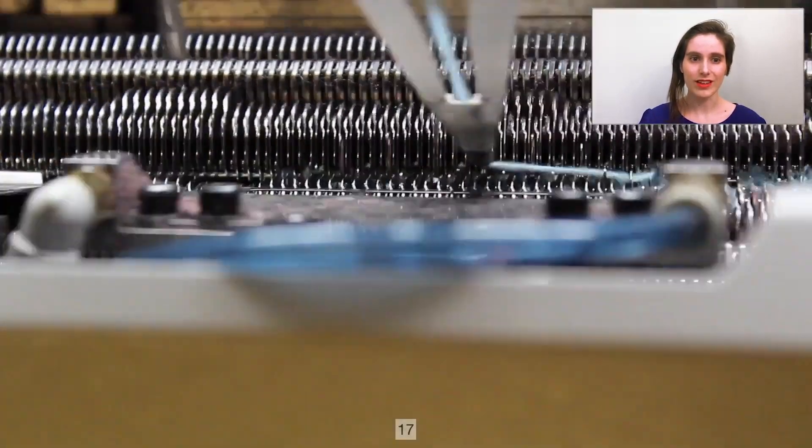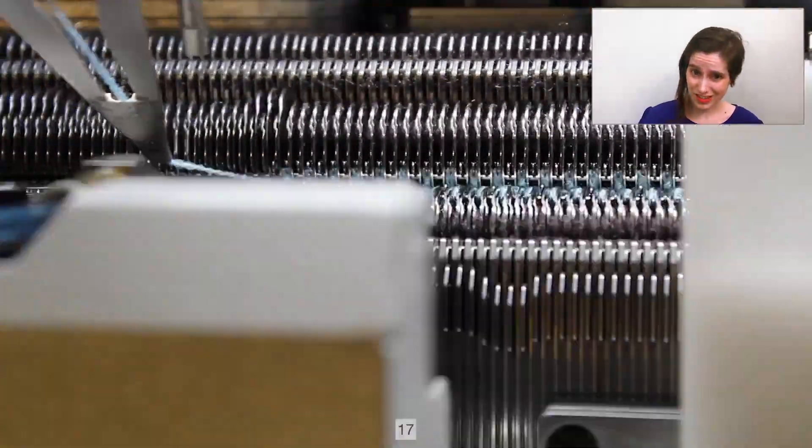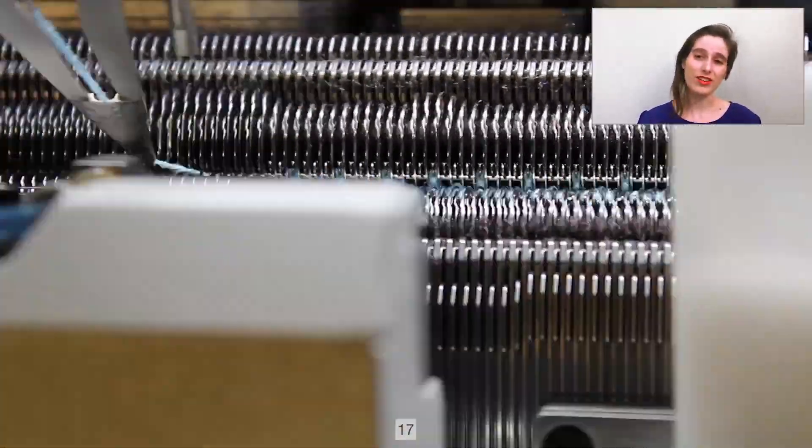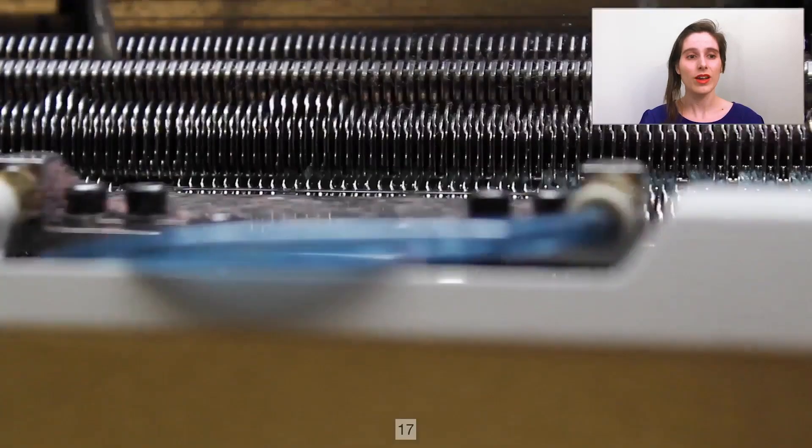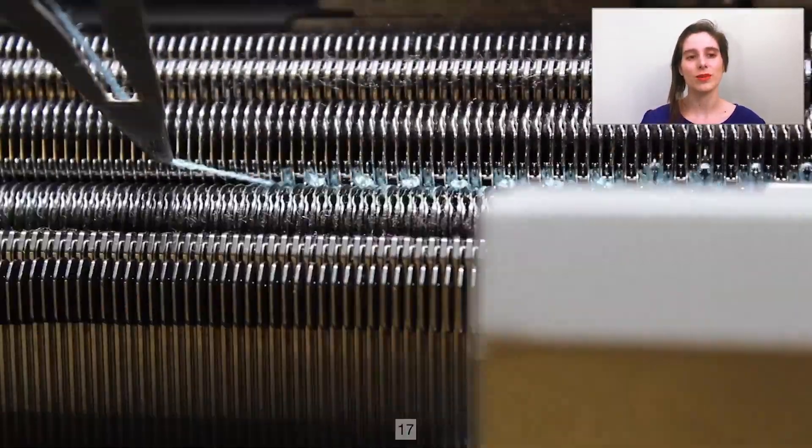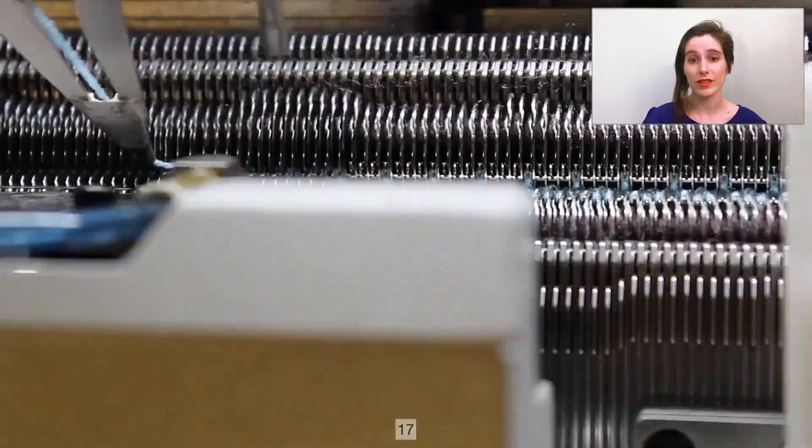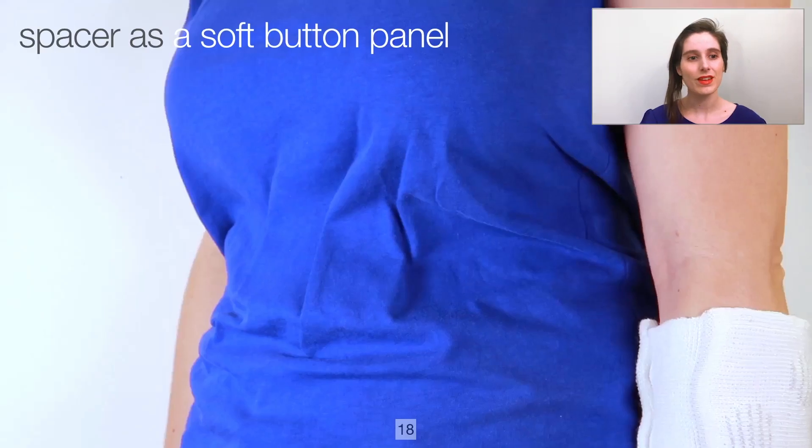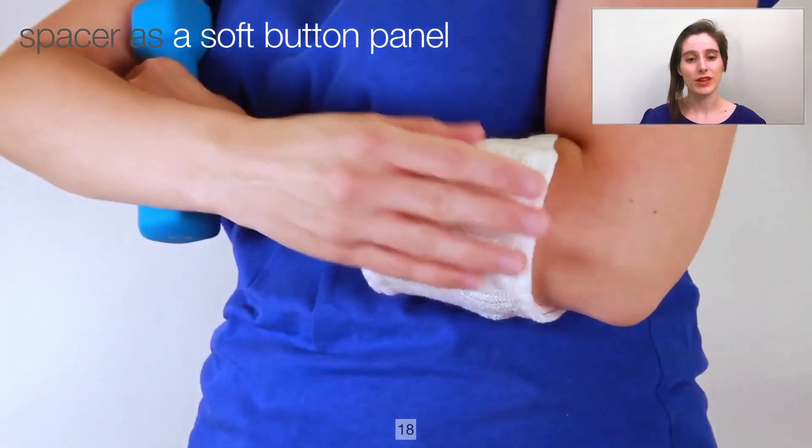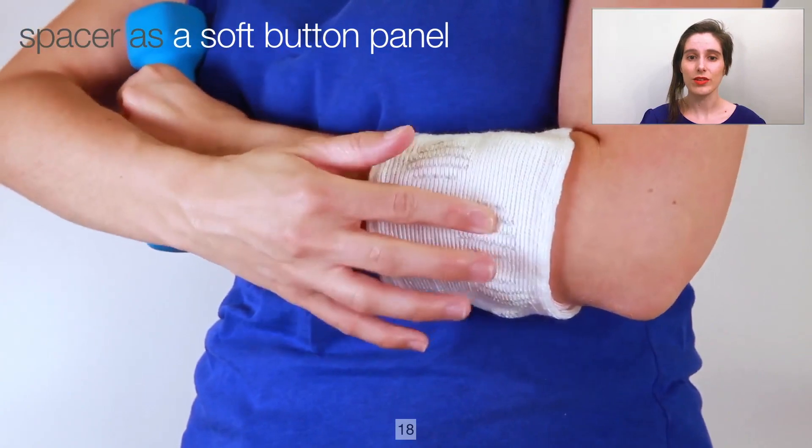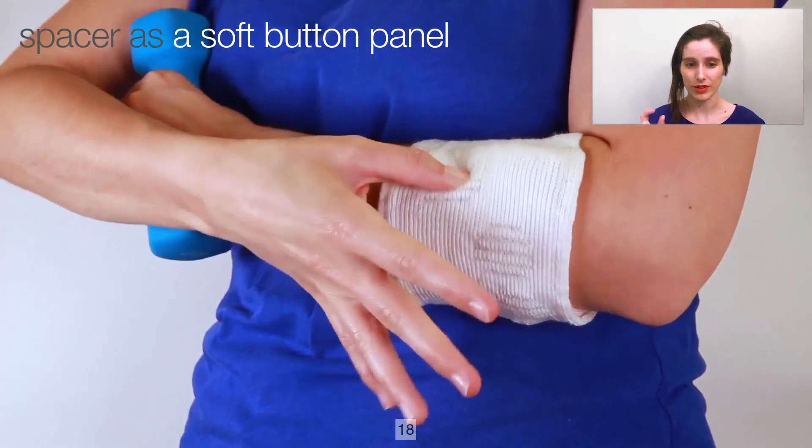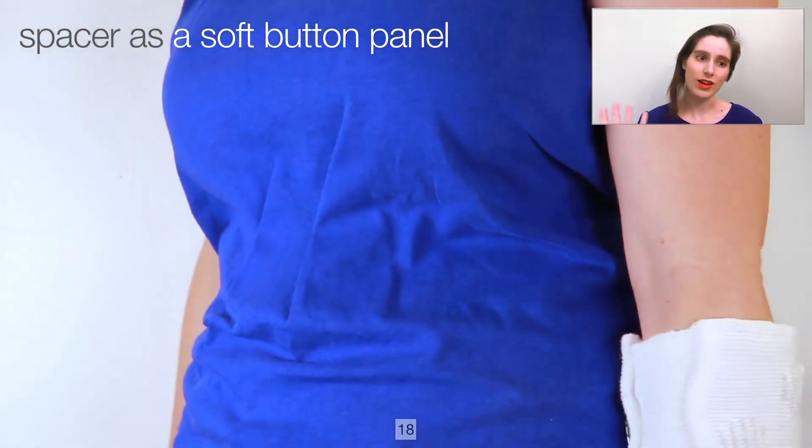With computational weft knitting, a spacer fabric can be assembled computationally, so instead of knitting yardage and post-processing it into what we want, we can tune those characteristics to a particular area of an overall assembly right within the knitting process. So for example, we can incorporate conductive yarns for sensing and use small local bumps of thicker spacer material as tactile cues, a soft button panel.